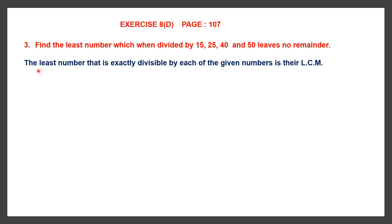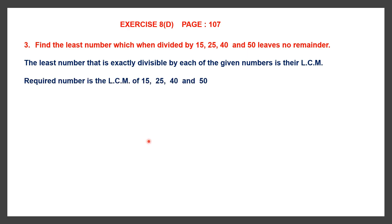The least number that is exactly divisible by each of these given numbers is the LCM. Divisible by all these is the LCM. That means we have to find the LCM of these numbers. So the required number is the LCM of these numbers.